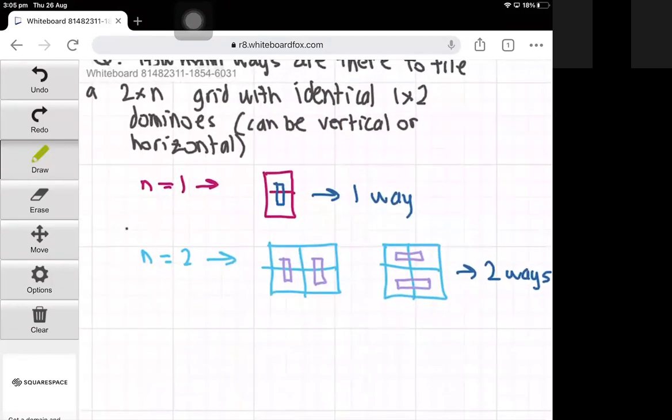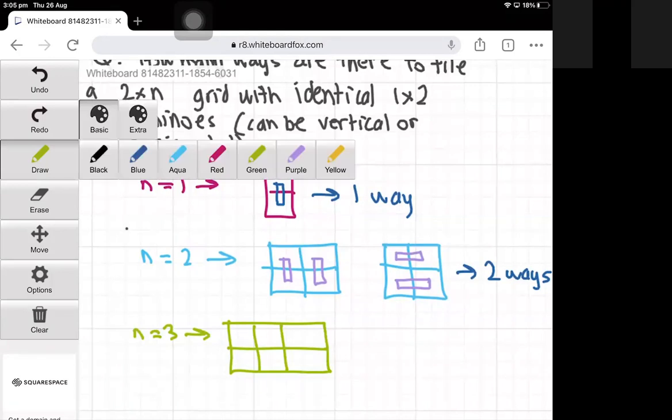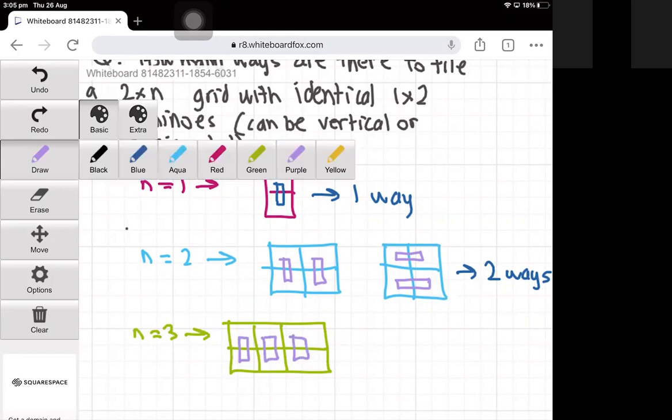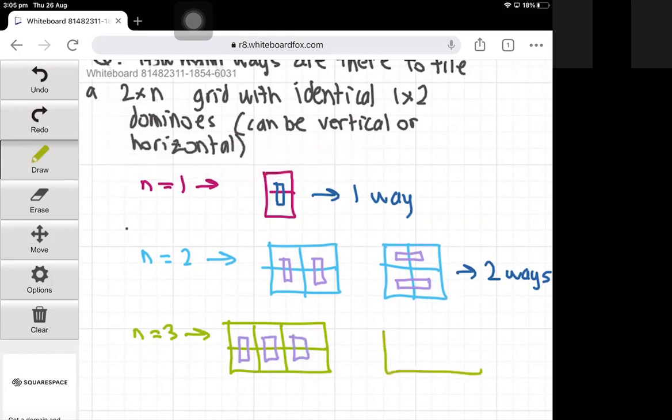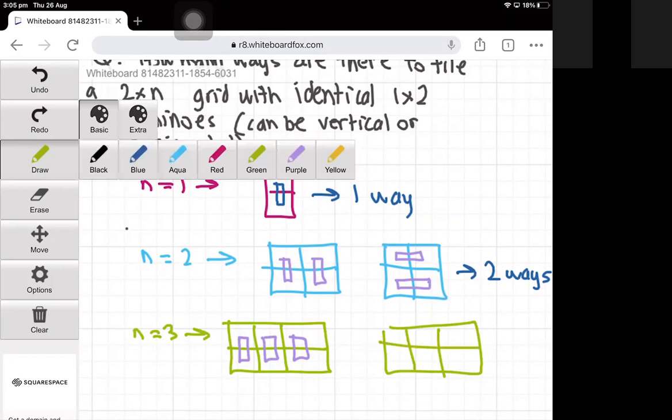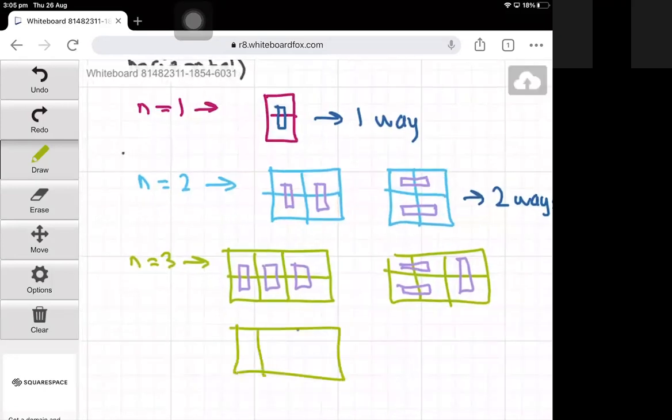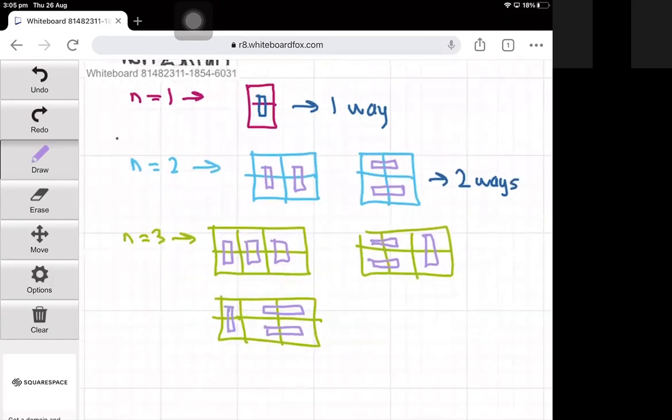Now for n equals 3, we have a 2×3 grid. We can tile it like this, we can also tile it like this, and finally we can tile it like this. So there's three different ways of tiling it.